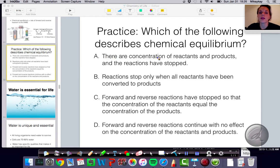So for A, there are concentrations of reactants and product, and the reactions have stopped. This is a lot of times a misconception that people have. At equilibrium, everything is balanced, and now suddenly the reaction has stopped because you have a balance between the products and the reactants. That is not true. In chemical equilibrium, the reaction is still going forward and reverse. So it's not stopped.